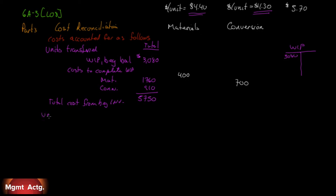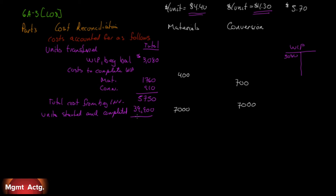Next, we move on to units started and completed. We transferred 8,000 units, but beginning inventory represented 1,000 units. Once we spent the extra money, we transferred 1,000 units. So if we transferred 8,000, we started and completed another 7,000 units. Under materials it was 7,000, and under conversion it was 7,000. We multiply 7,000 by the whole cost of $5.70 and get $39,900.